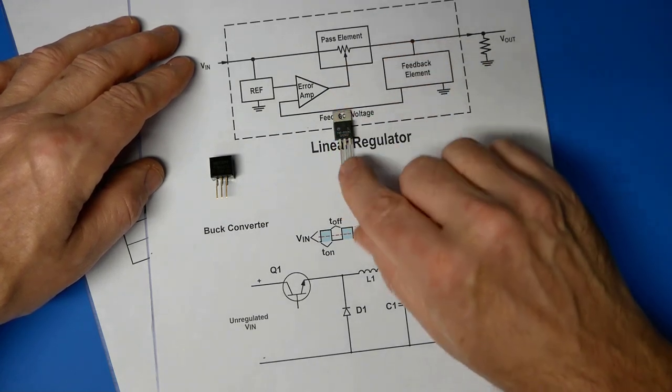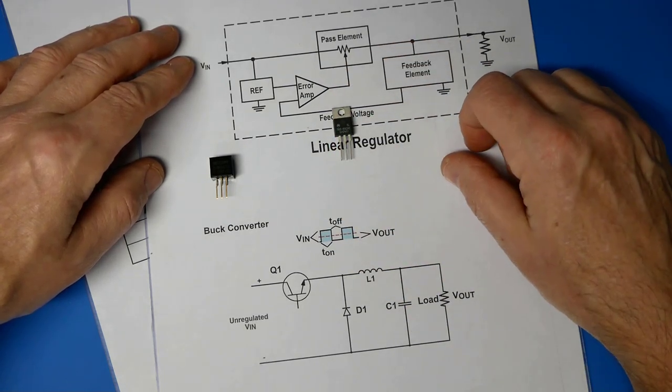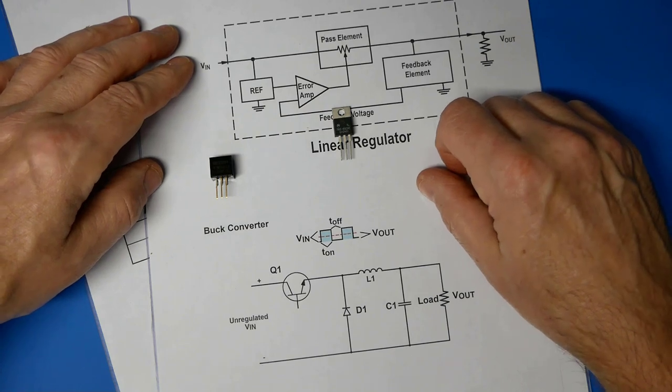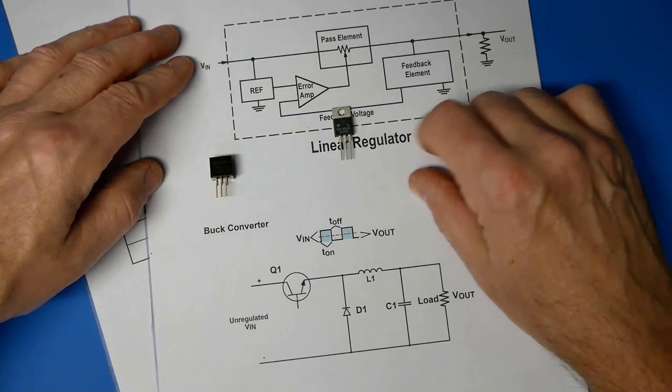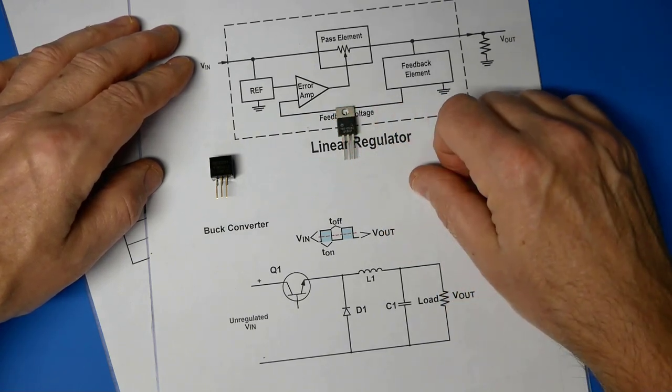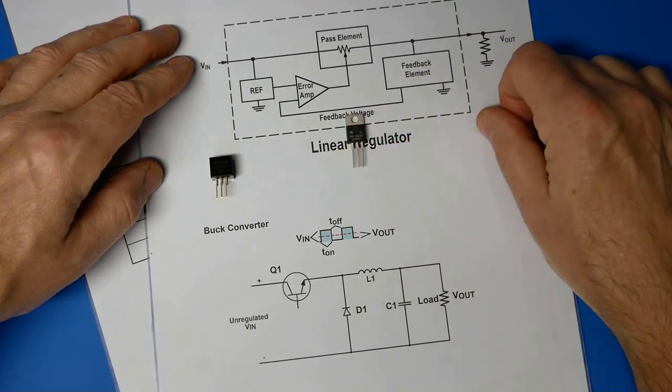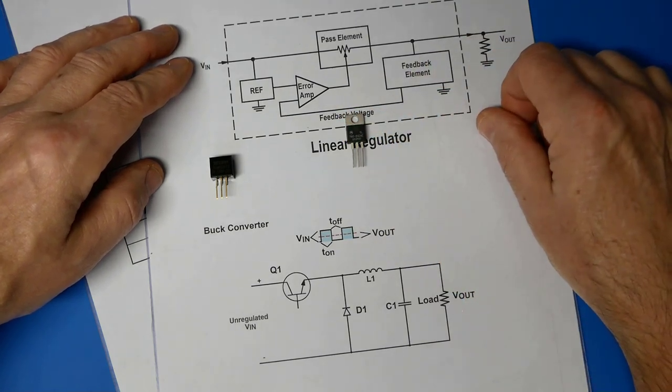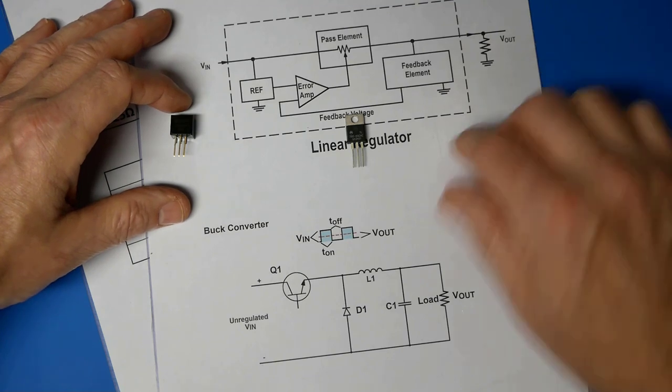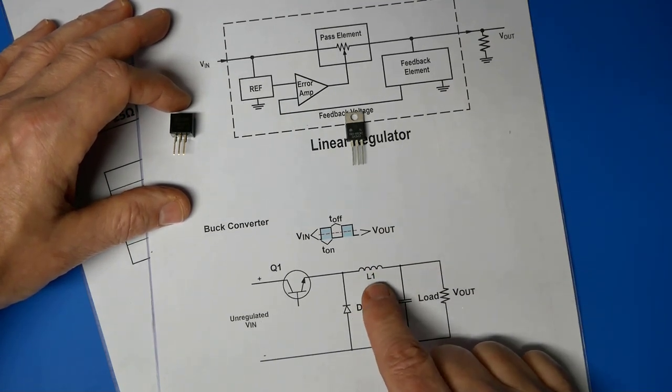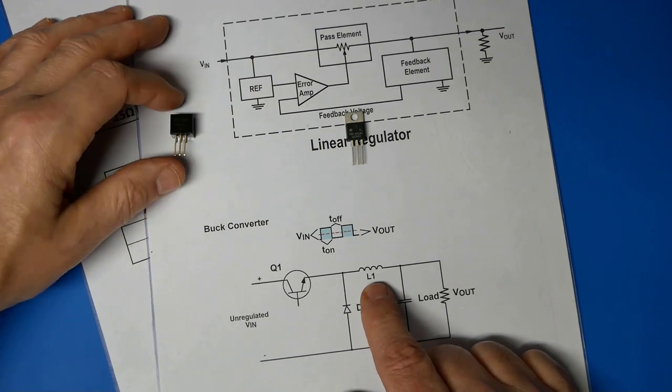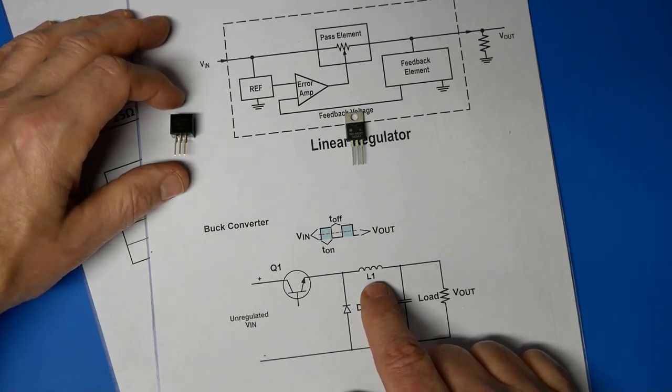I didn't want to use the old standby 78 series regulators because they're terribly inefficient and there's just a lot of heat that has to be dissipated on that big collector plate. Unfortunately I couldn't use a standard buck converter because I didn't have room for an inductor. It's a very small confined space.